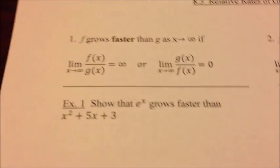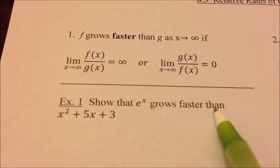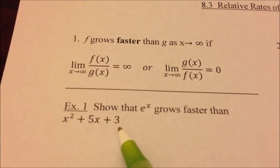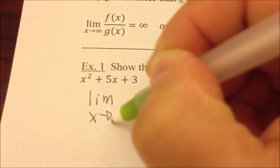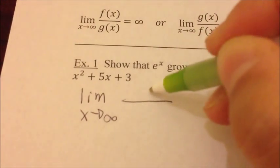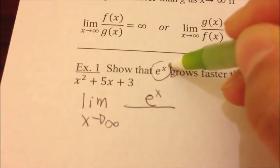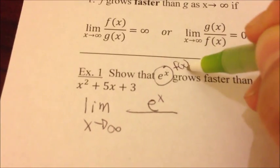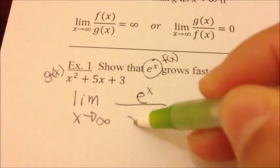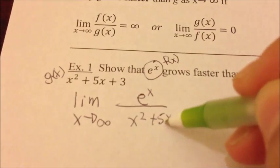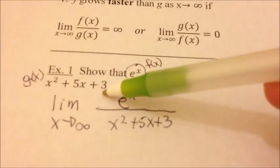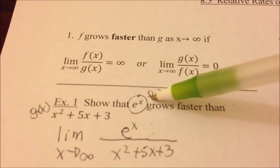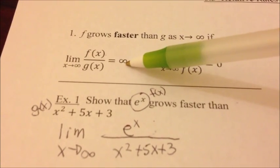Let's try some examples similar to the homework. Example 1 says show that e^x grows faster than x²+5x+3. We're going to write the limit as x approaches infinity and put e^x as the numerator — that's our f(x). The other equation, x²+5x+3, is g(x), which goes in the denominator. Since f(x) is on top, we need the result to equal infinity.